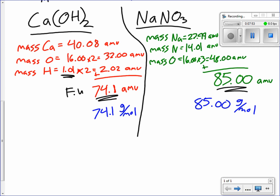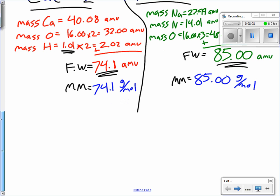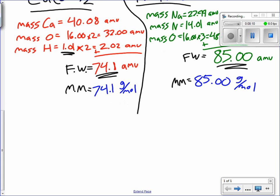So this is formula weight. This is molar mass. Same thing over here. Getting really lazy with my abbreviations. So the only difference is the units. Okay. The only difference in the units. And I'll show you in the next section why molar mass exists. Why it's important. All right.